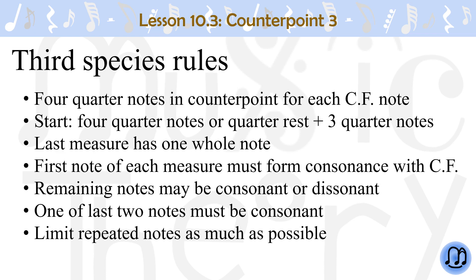In third species counterpoint, there are four quarter notes in the counterpoint for each note in the Cantus firmus. You can start with either four quarter notes in the first measure, or a quarter rest followed by three quarter notes. The last measure always has one whole note.